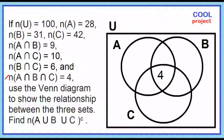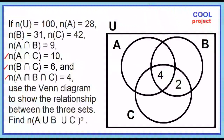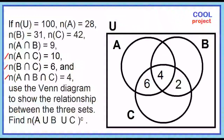Start with the cardinality of A intersection B intersection C, which is 4. Place 4 in that area. The cardinality of B intersection C is 6; since we already have 4, 6 minus 4 equals 2. The cardinality of A intersection C is 10; since we already have 4, 10 minus 4 equals 6. The cardinality of A intersection B is 9; since we already have 4, 9 minus 4 equals 5.